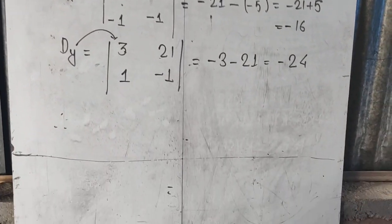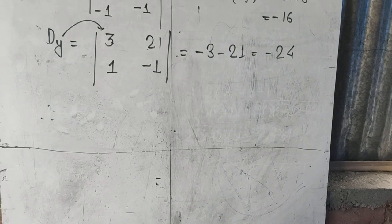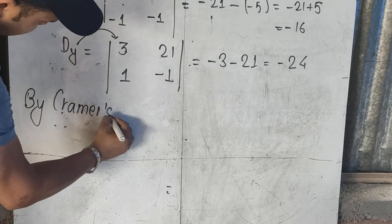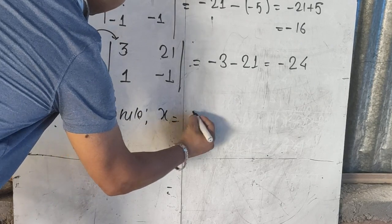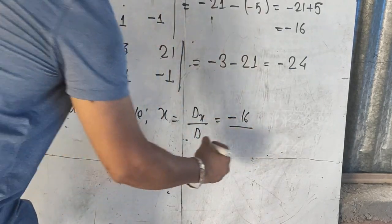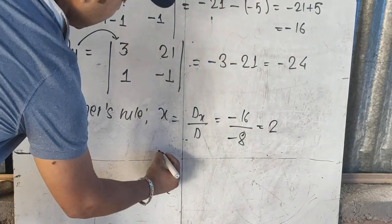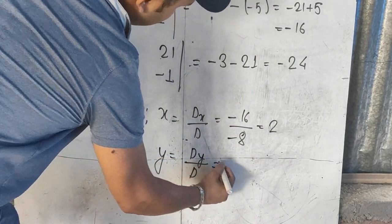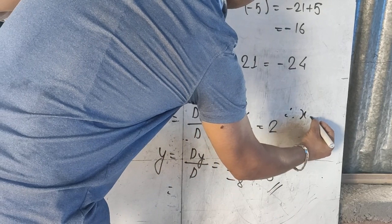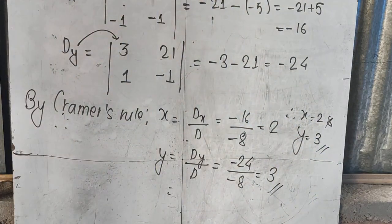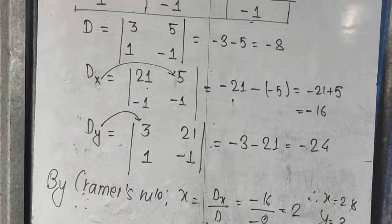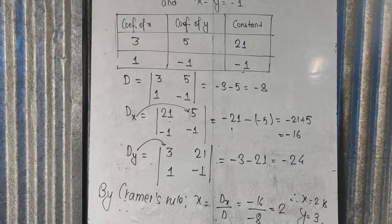According to Cramer's Rule, x equals Dx divided by D. Dx is minus 16 and D is minus 8, so x equals 2. Similarly, y equals Dy divided by D. Dy is minus 24 and D is minus 8, so y equals 3. This is quite an easy way to solve a problem. We will also use Cramer's Rule in class 11 and in higher studies.